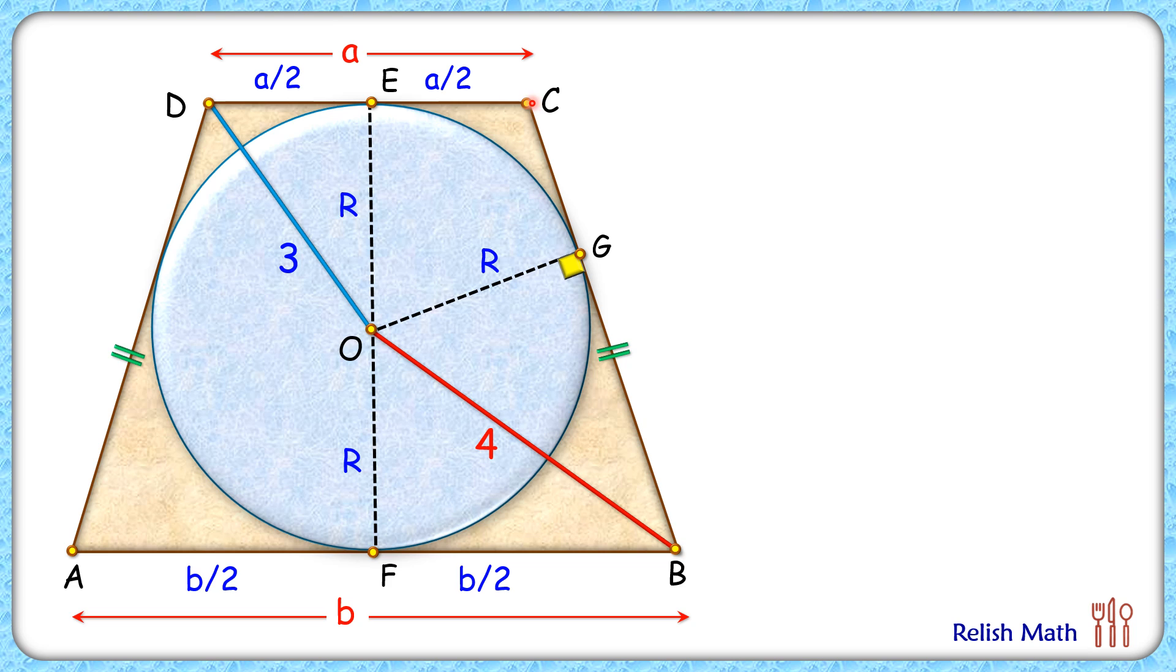Now from point C, we have drawn two tangents CE and CG. So by theorem they will be equal and thus CG will be A by 2. Also from point B, two tangents BF and BG are drawn. They will be equal in length so BG will be B by 2. And thus full length CB that will be A by 2 plus B by 2 or A plus B by 2.